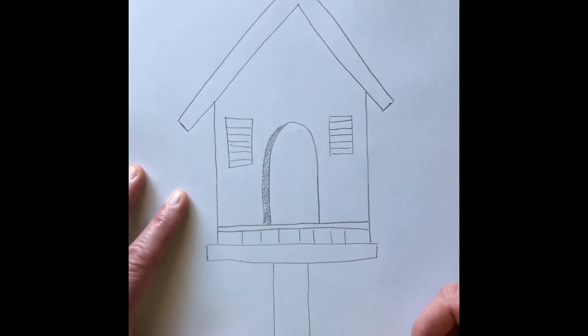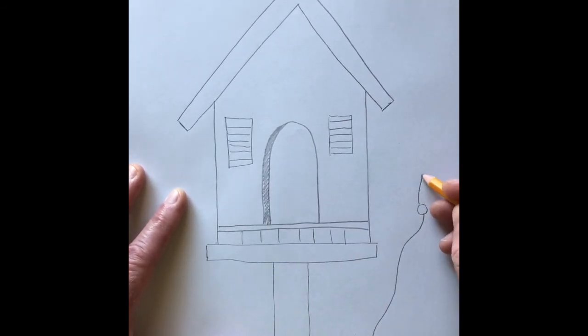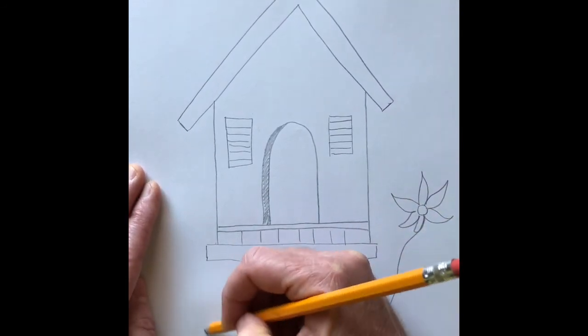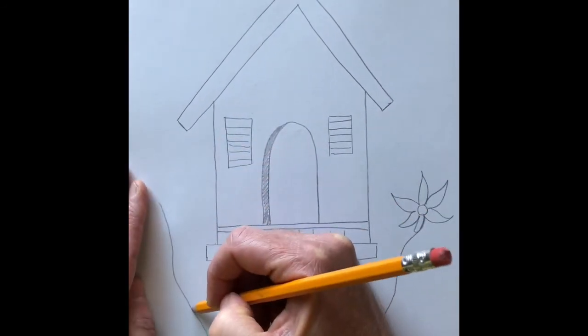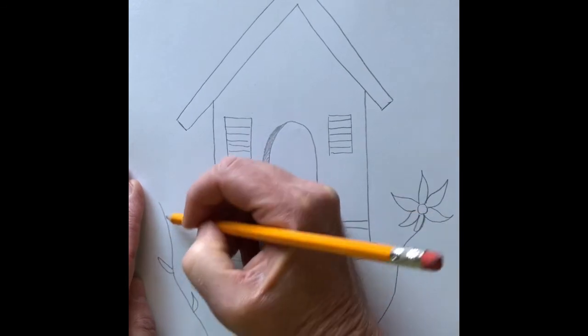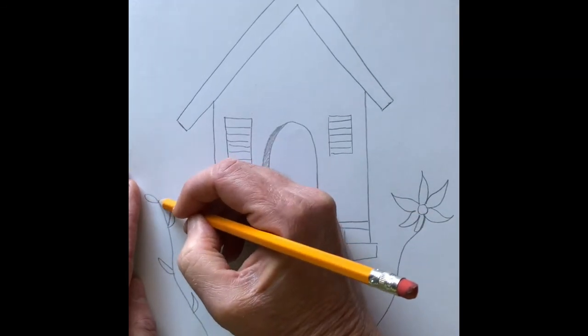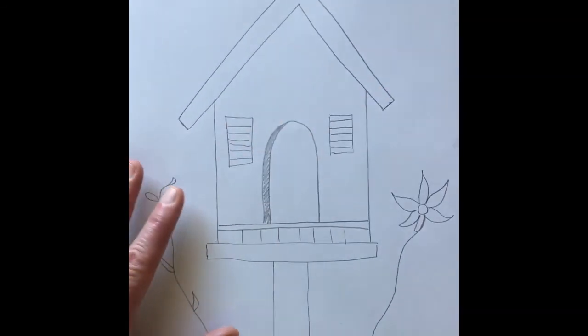Maybe now you just want to go in and add some flowers. It's spring, the flowers are coming out. You can add some flowers, maybe some plants, maybe a tree. Whatever you want to add to your birdhouse picture.